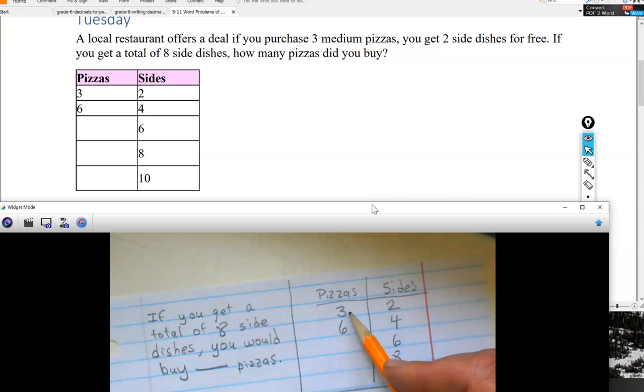One thing I've noticed here is for three, you get two. Six, you have four. I notice that's increasing up here. Two, four, six, eight. Here's three and six.